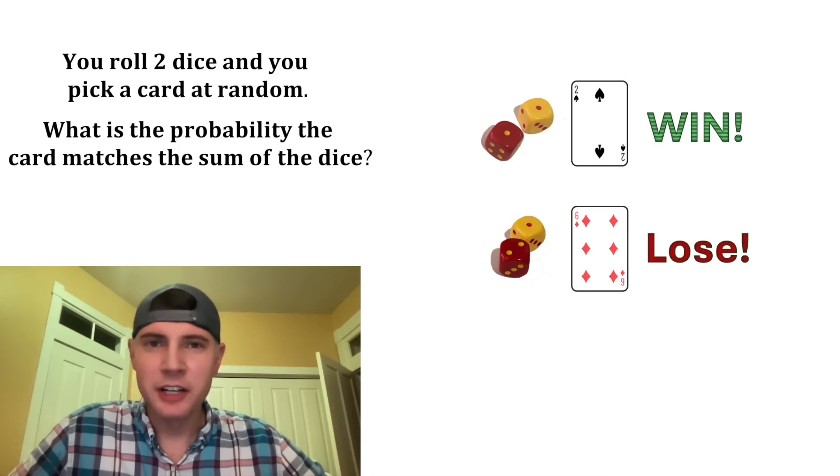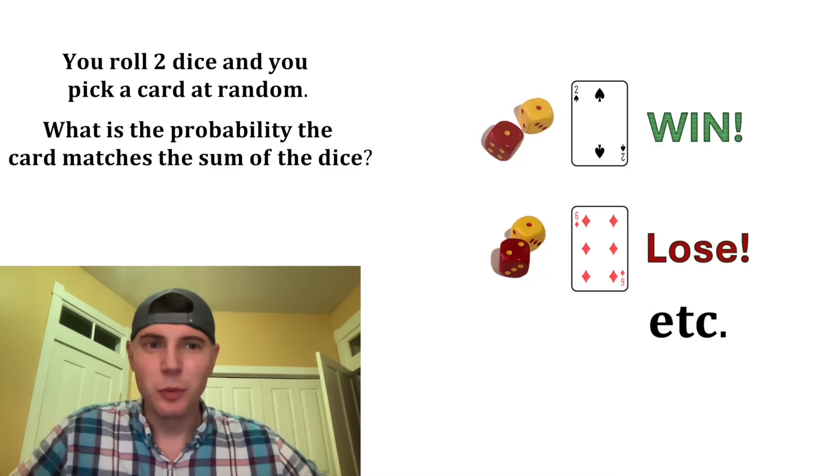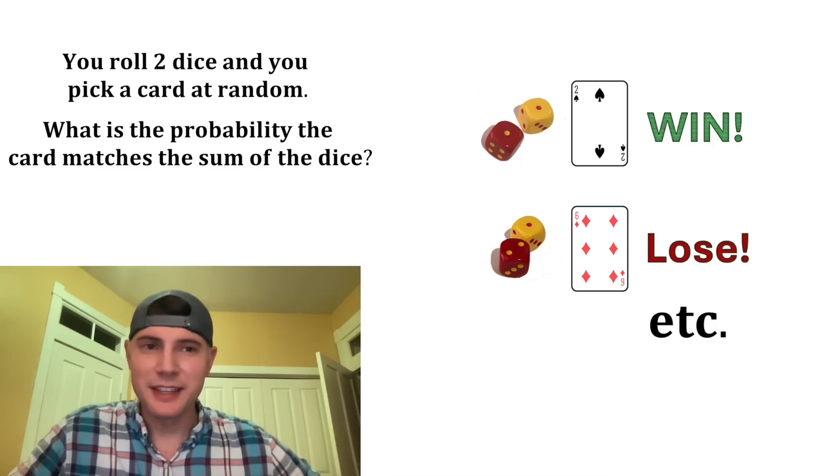And an ace would be equal to one, a jack would be 11, a queen would be 12, and a king would be 13. So what is the probability that you would win this game?